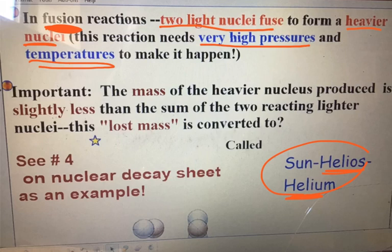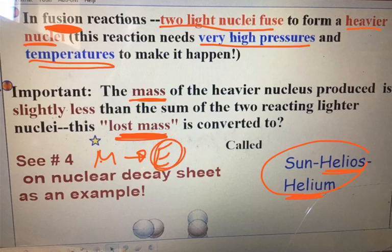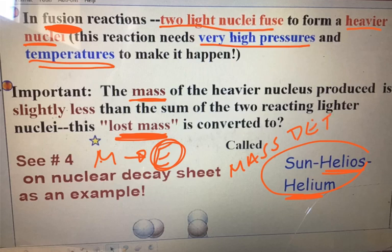A unique thing that happens in nuclear chemistry is that some mass is actually lost. What do you think that mass is lost to? It's turned into energy. That process — where the product side is a little lighter than the reactant side because some mass was converted to energy — is called mass defect.